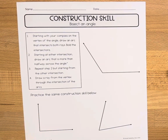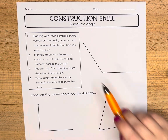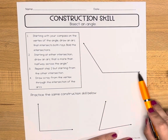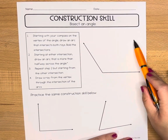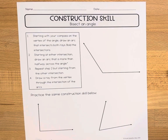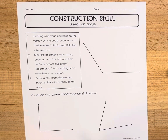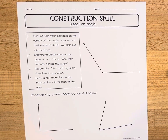In this video we'll be learning how to bisect an angle. We are going to take a given angle and find the angle bisector through a construction. Basically, the angle bisector splits the angle into two congruent parts.